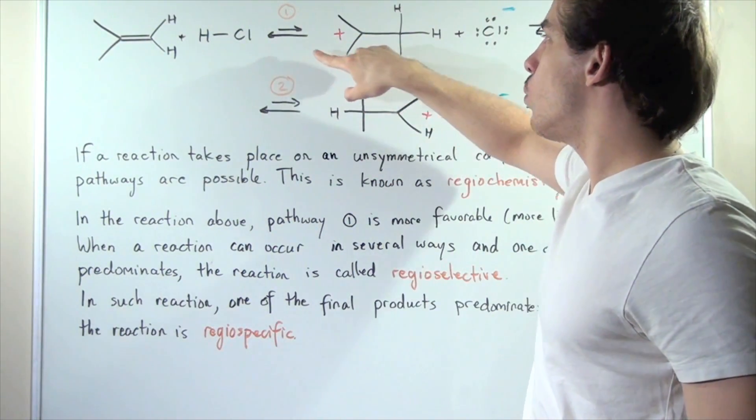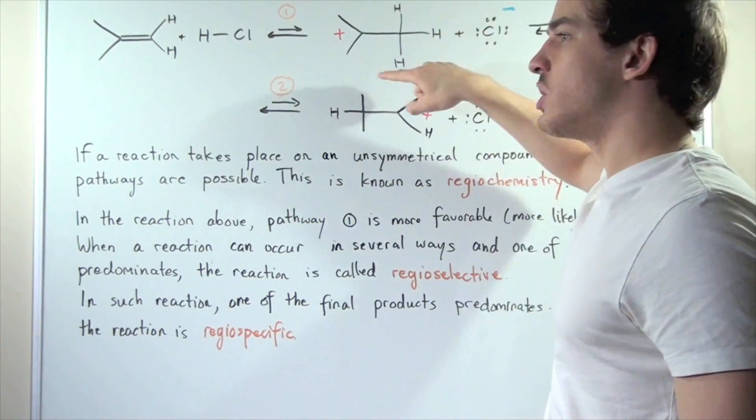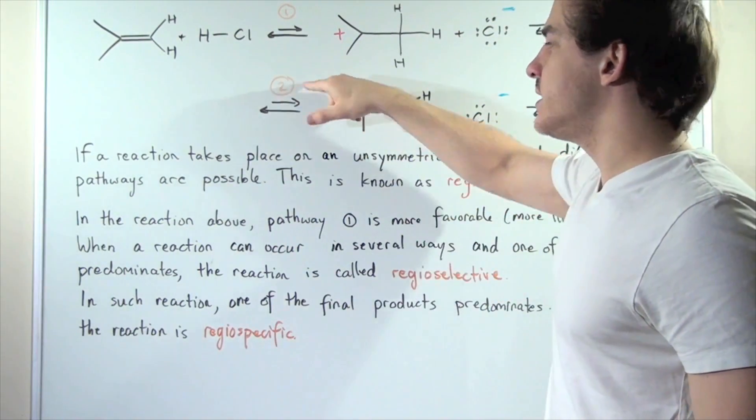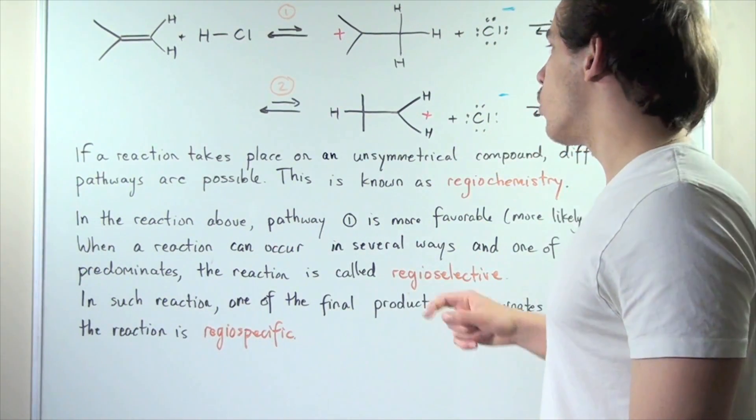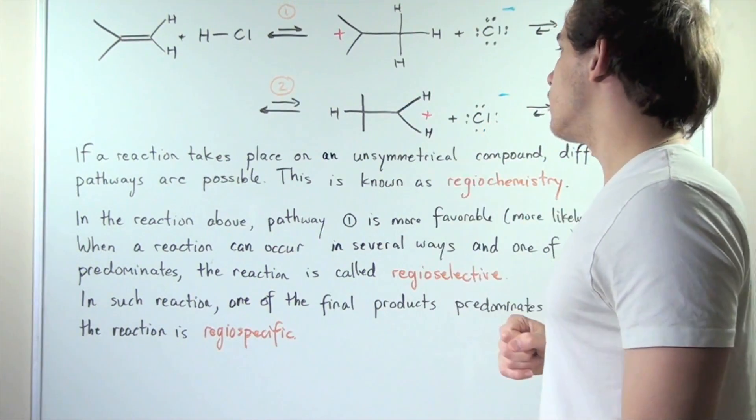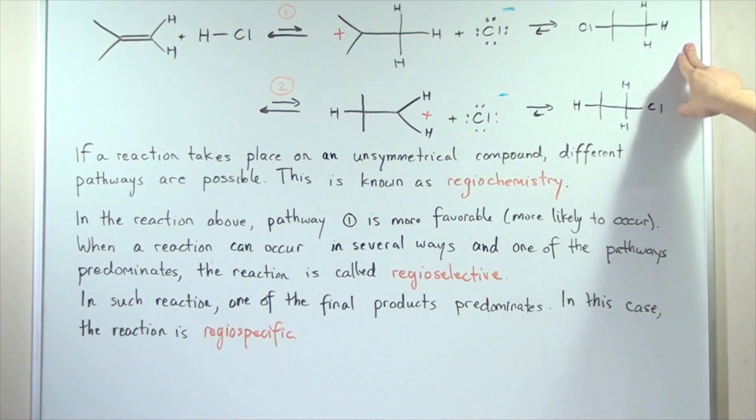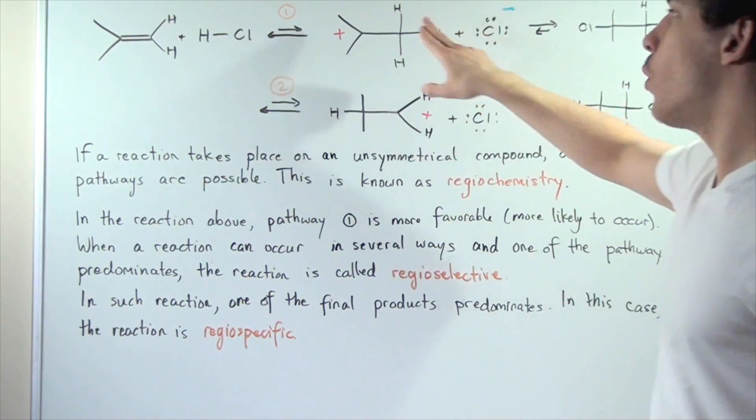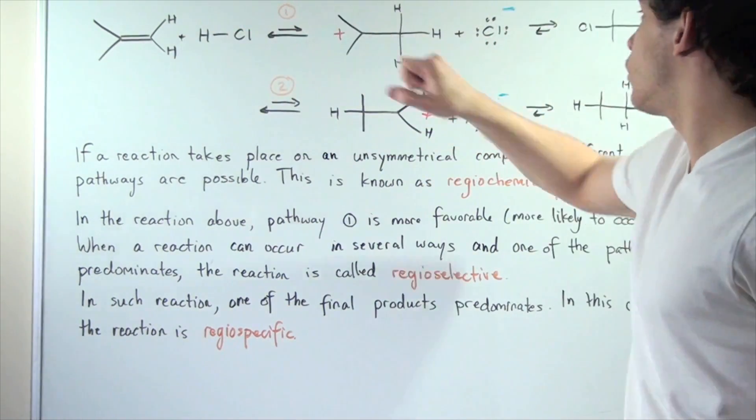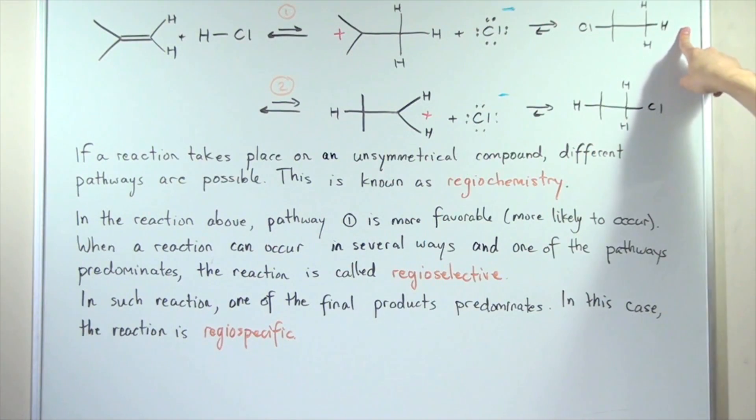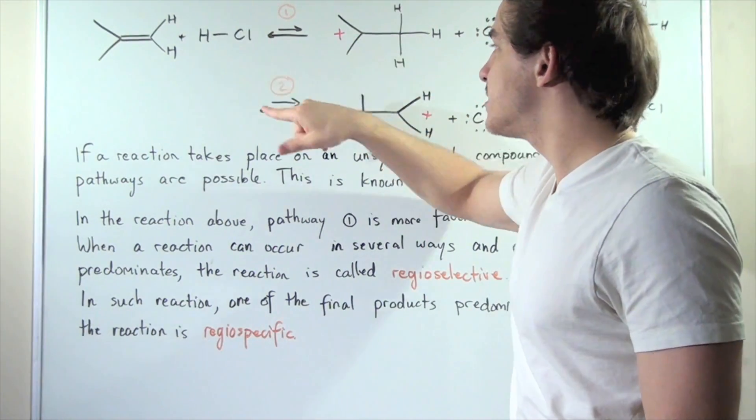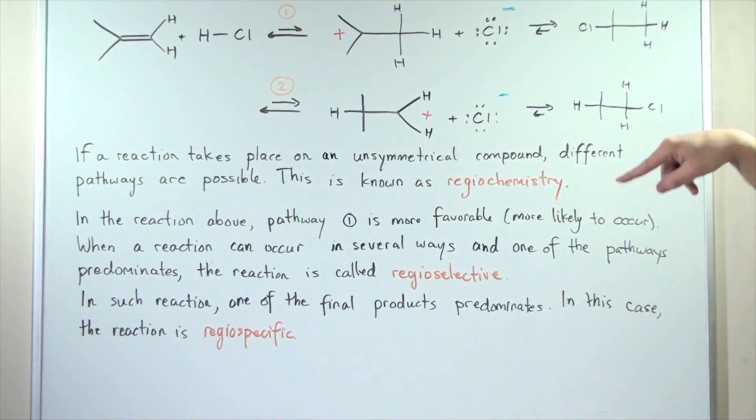We can either take pathway one and form a tertiary carbocation, or we can take pathway two and form a primary carbocation. In each reaction, a different product is formed. When our reaction takes pathway one, we form one product. When it follows pathway two, we form a different product.